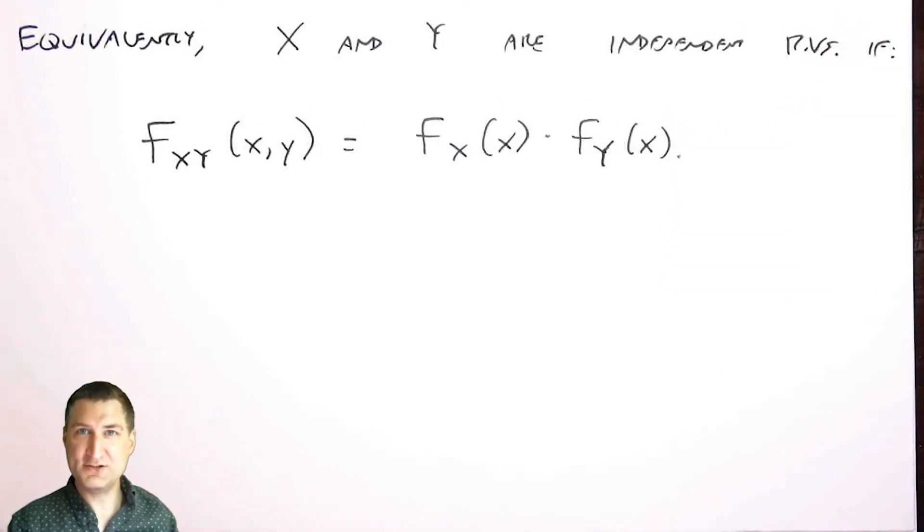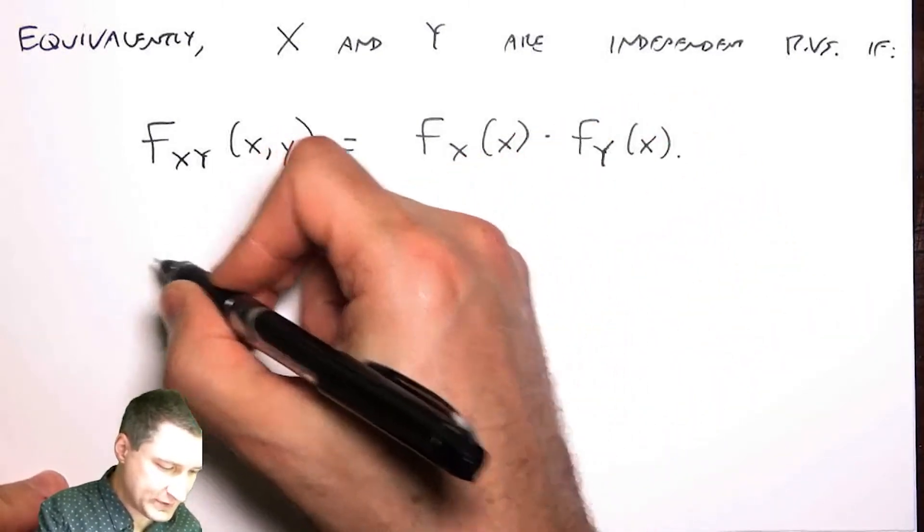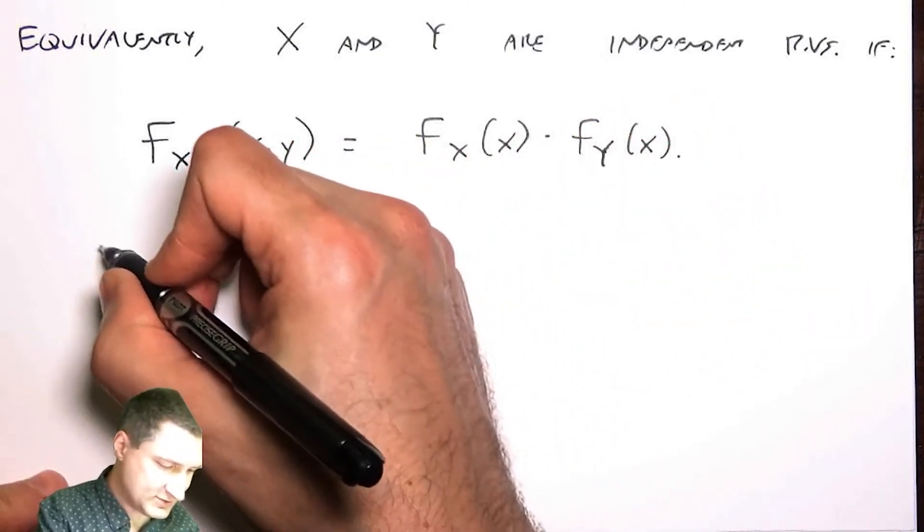Okay, super easy to check whether that's true or not. You just look at the PDF and you tell, hey, this is something that looks like a piece in X and a piece in Y. So for example, let's suppose I look at the uniform random variables. So in 2D,